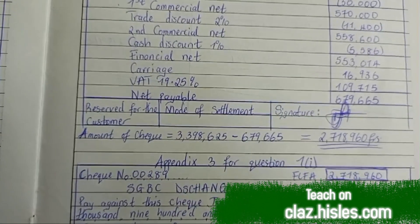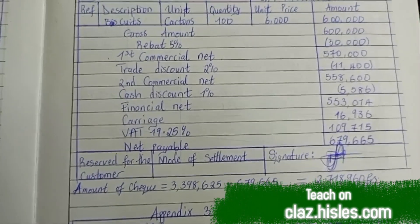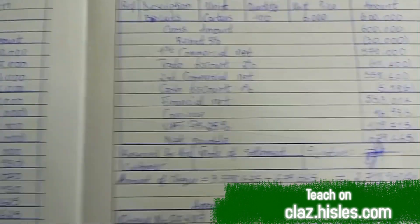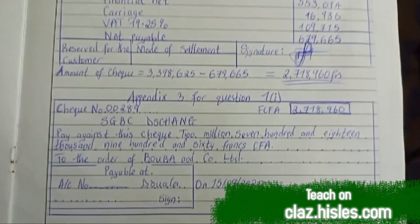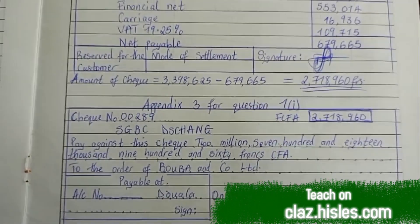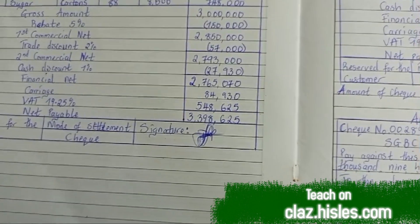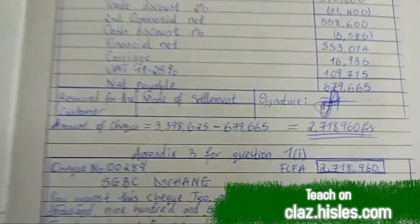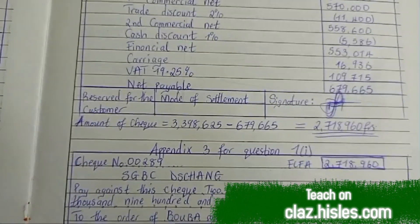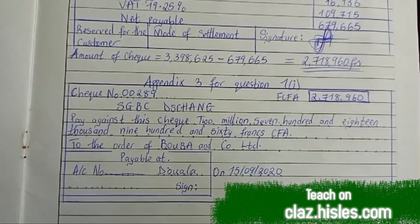They told us that a check was issued with the difference, so we issued a debit note, and then a credit note was later issued. To get the amount of the check the customer is supposed to pay, we took the difference between the net payable of the debit note and the net payable of the credit note. That gave us two million seven hundred and eighteen thousand nine hundred and sixty francs — that's the amount put in the check.